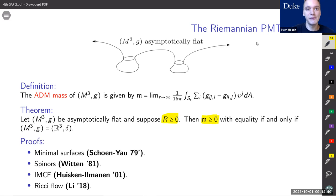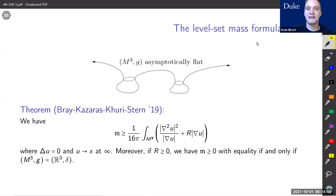Of this positive mass theorem there are several proofs available: one by minimal surfaces, one by spinors, one by inverse mean curvature flow, and one by Ricci flow. Moreover, there's been a very recent proof by Bray-Kazaras-Carlstone where they showed not just that the mass is non-negative but that it satisfies a lower bound: the mass is bounded from below by 1 over 16π times the integral of |Hess u|² divided by |∇u|, plus the scalar curvature times |∇u|. The right-hand side is always non-negative, so in particular you have the positive mass theorem.